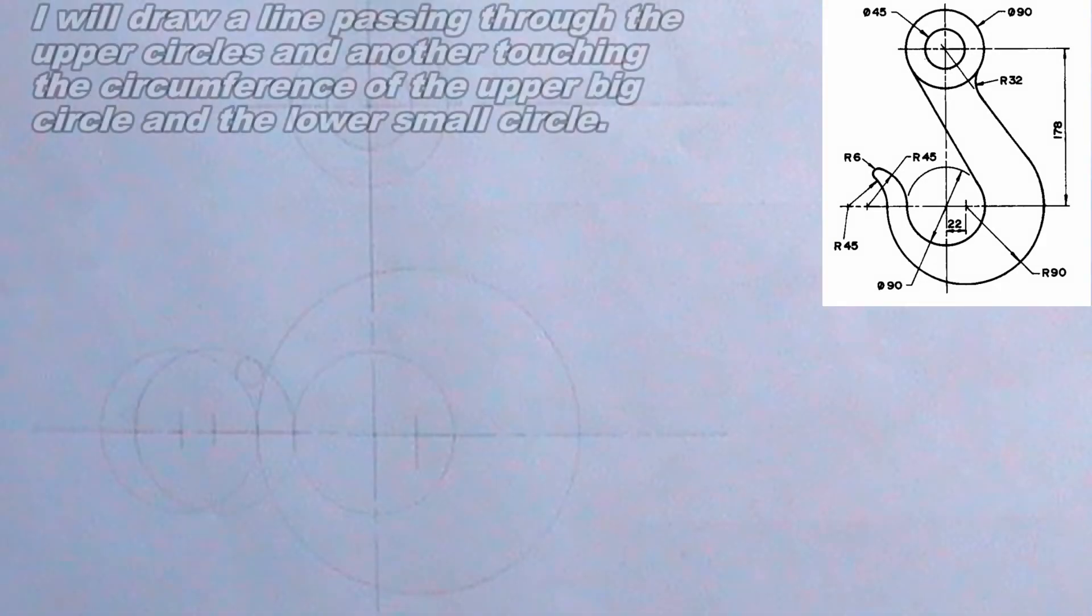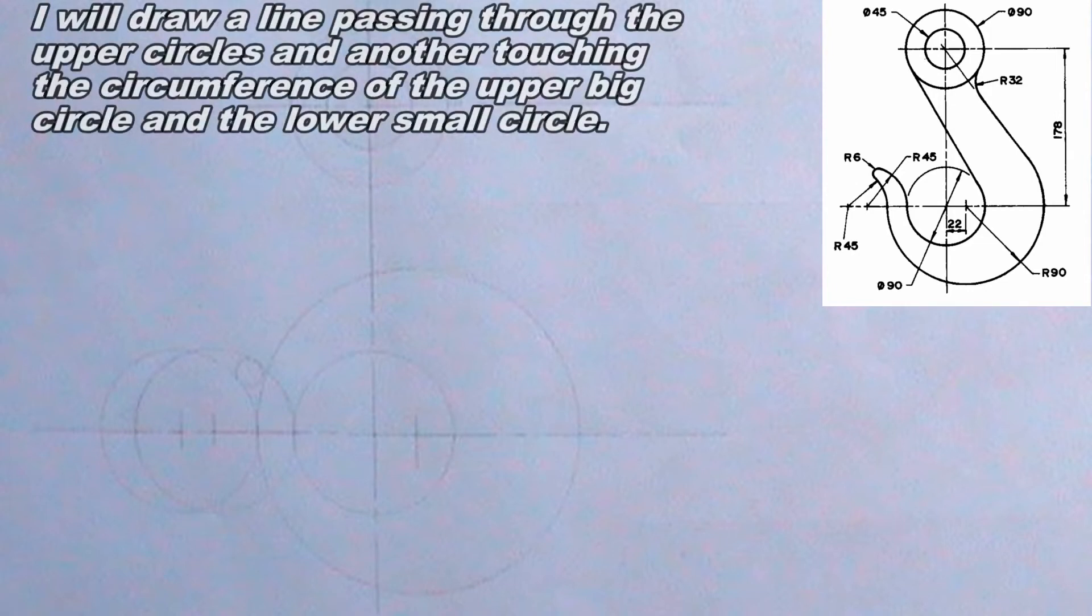Next, I will draw a line passing through the center of the upper circles and touching the circumference of the lower big circle. I will also draw another line touching the circumference of the upper bigger circle and the circumference of the lower small circle.